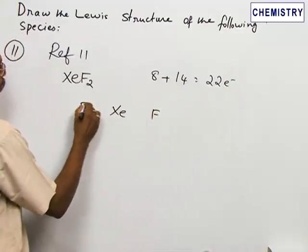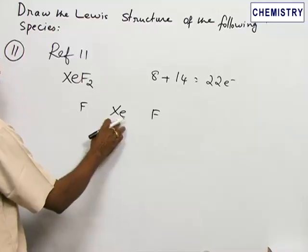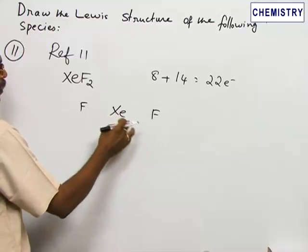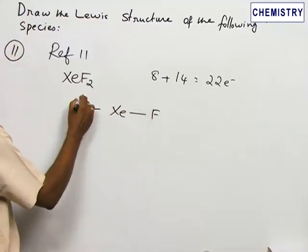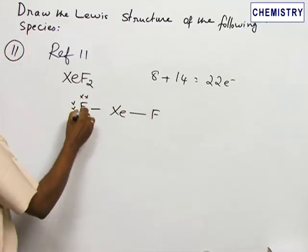Xenon is a noble gas, so sometimes a super octet or expanded octet is allowed. If we start with a single bond here and distribute the electrons - two, four, six - this fluorine has an octet.